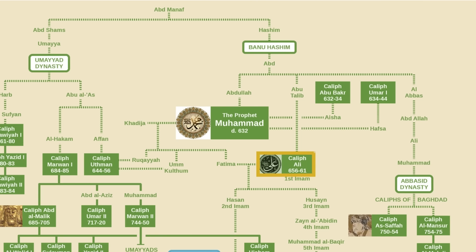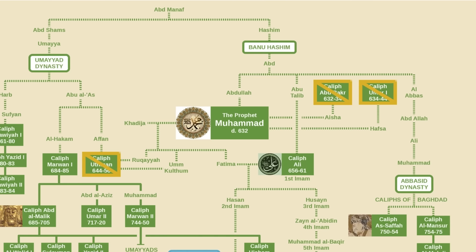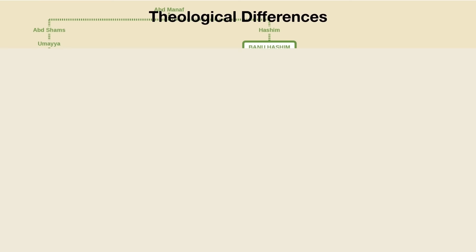Ali was overlooked for the caliphate twice more. When Abu Bakr died, Umar succeeded him, and then after him, Uthman. It was only when Uthman died in 655 that Ali finally came to power. This is where the divide between the Shias and the Sunnis begins. Sunnis venerate all the companions of the Prophet and consider them all to have been pious Muslims. Shias, however, don't believe this — they see Abu Bakr, Umar, and Uthman as not only usurpers who stole the caliphate from Ali, but also as oppressors. They don't see them as legitimate caliphs. For them, Ali was the first caliph, not the fourth.